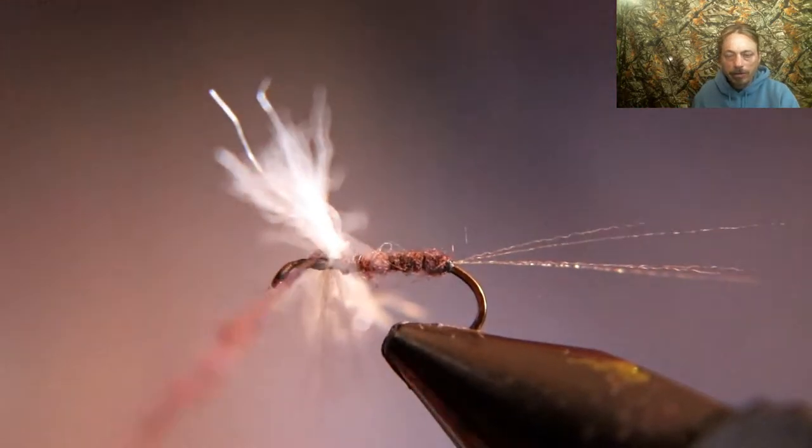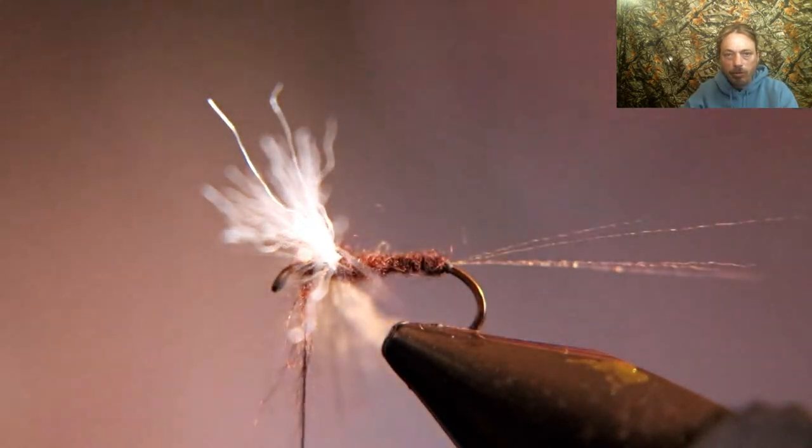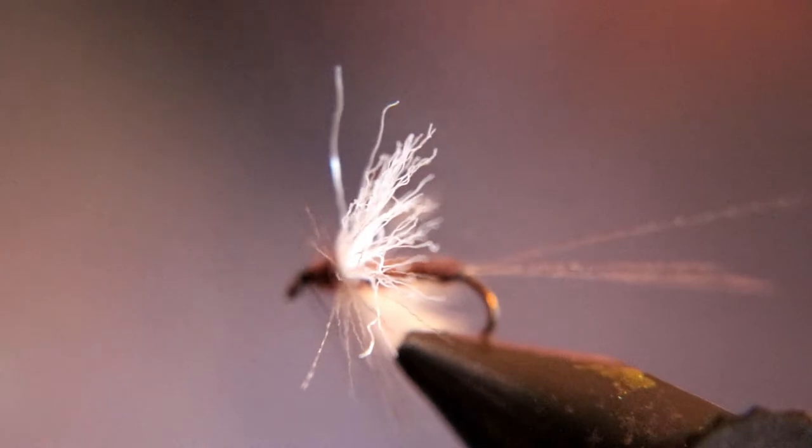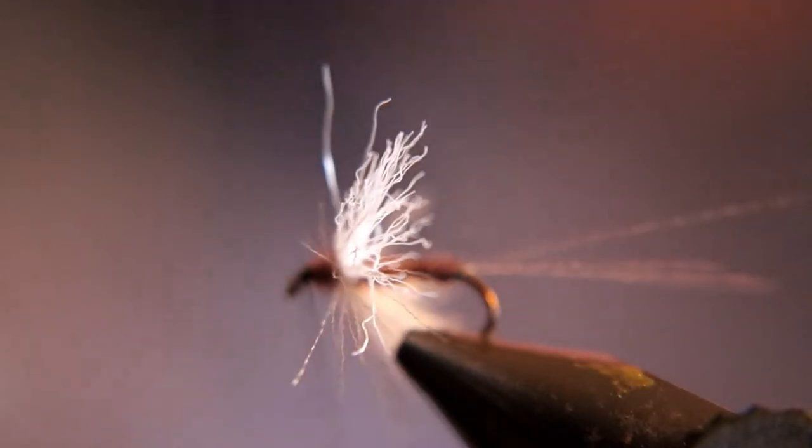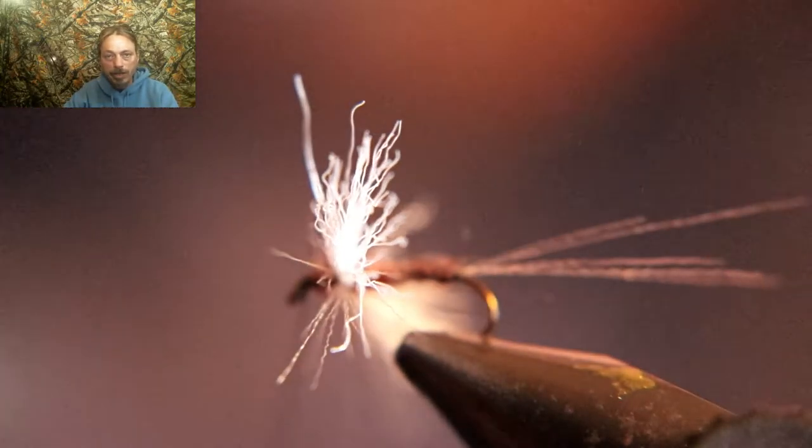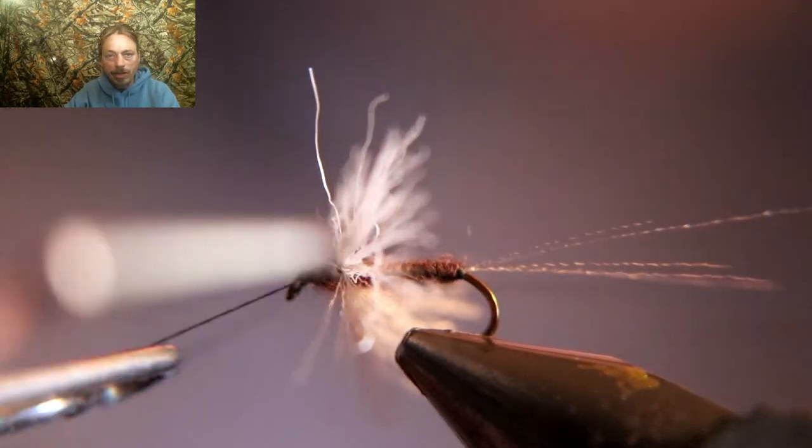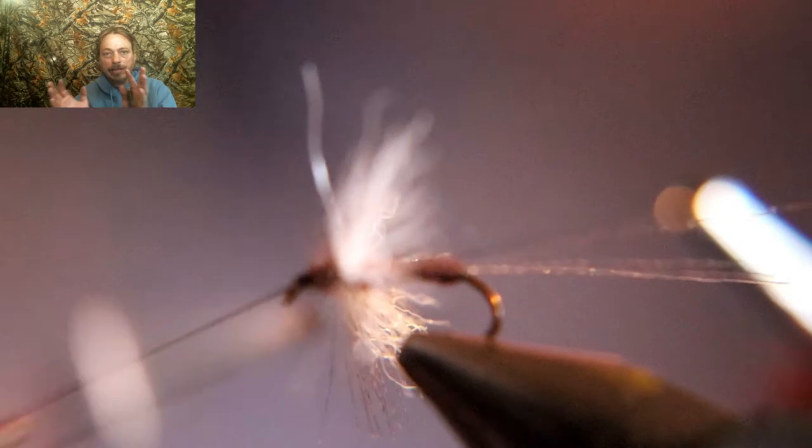What I'm gonna do here is I'm gonna go over top twice with the dubbing to build a little thorax, and then I'm gonna take a little bit of dubbing past the wing to the eye of the hook. Now we build up a little head, we're gonna whip finish it. I put two whip finishes in it, don't need no head cement. That's it, that's the fly.